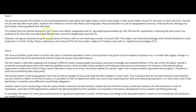It is evident that the interest assessed in 2017 shows how maths, geography, and PE decreased approximately by 15, 19, and 5% respectively. Following the same trend, the preference for chemistry was absolutely abandoned since at the beginning it just had 1%. However, the figures illustrate the growing popularity of history with an overwhelming increase of around 18%. This subject was followed by biology, which almost doubled its initial proportion of 13.4%. Finally, physics registered a rise of around 2% and the modern subject of IT barely rose, with an insignificant percentage of 0.2.